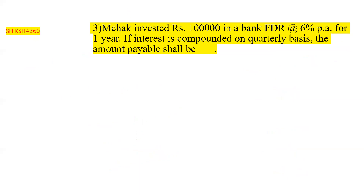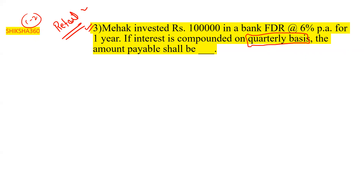Moving to question three: interest compounded on a quarterly basis — same base question. All three questions have been asked in the retail examination of CAP every year. In ABM they ask only one or two questions, but in retail they have asked more than three or even five questions as a complete case study. Mahek invested rupees one lakh in a bank FDR at six percent per annum for one year, interest compounded quarterly.